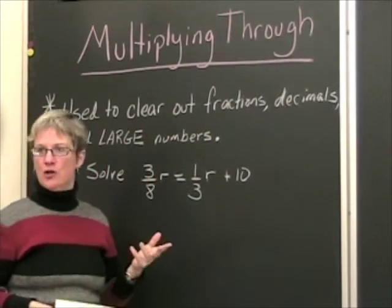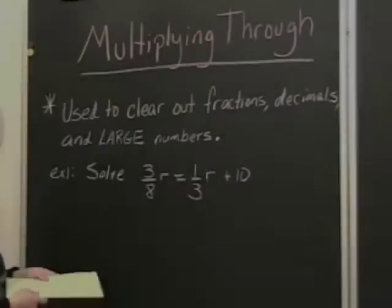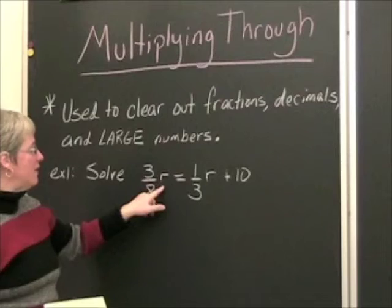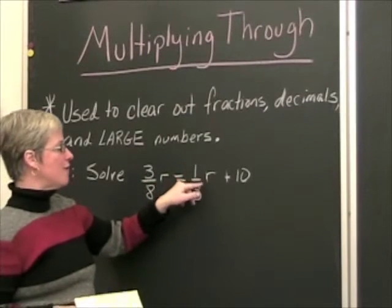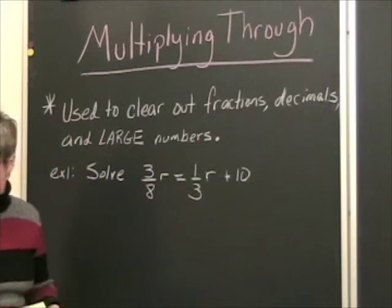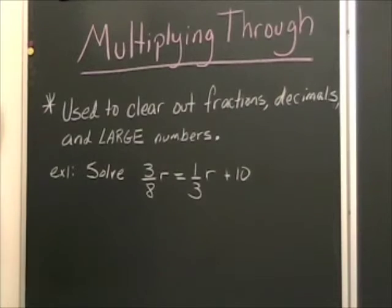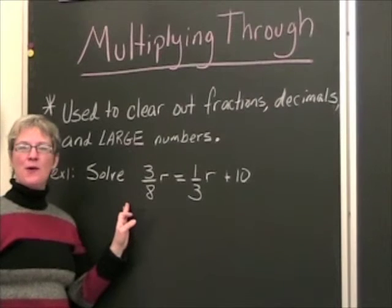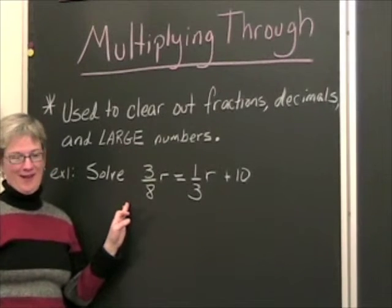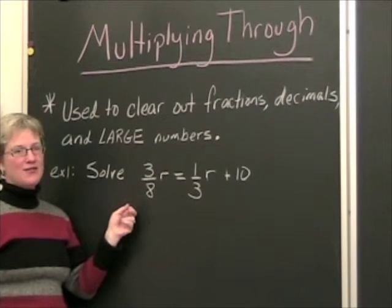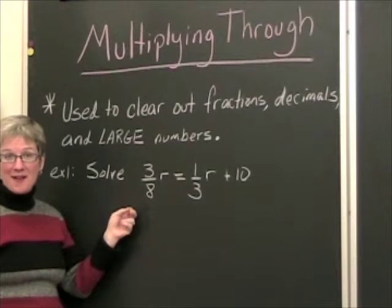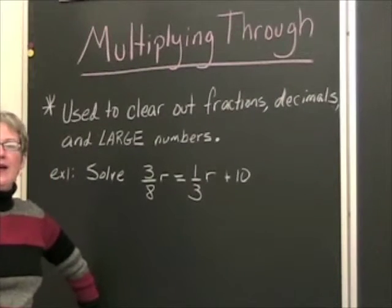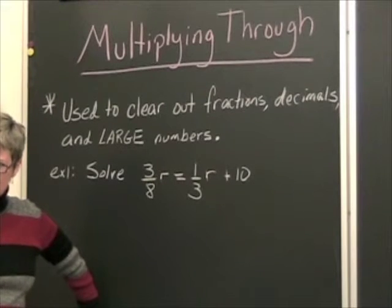Example one: solve three-eighths r equals one-third r plus ten. Now back in the day before we all had graphic calculators in our hands, we used to have to solve stuff like this without a calculator.